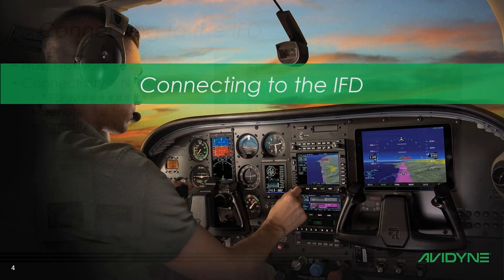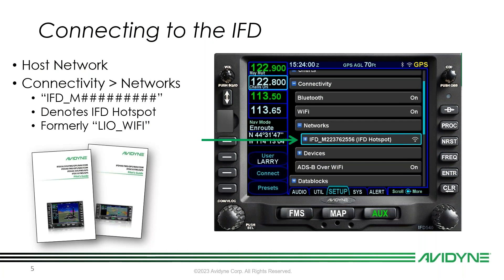Getting right into it — connecting to the IFD. All IFDs have built-in Wi-Fi modules inside them. For this webinar, I'm only discussing the internal Wi-Fi. There are other videos on how to connect a third-party ADS-B receiver — a Stratus, Stratux, or LevelBomb — which also works great with iFly, but that's for another video. Here we'll keep it simple with just the internal Wi-Fi.